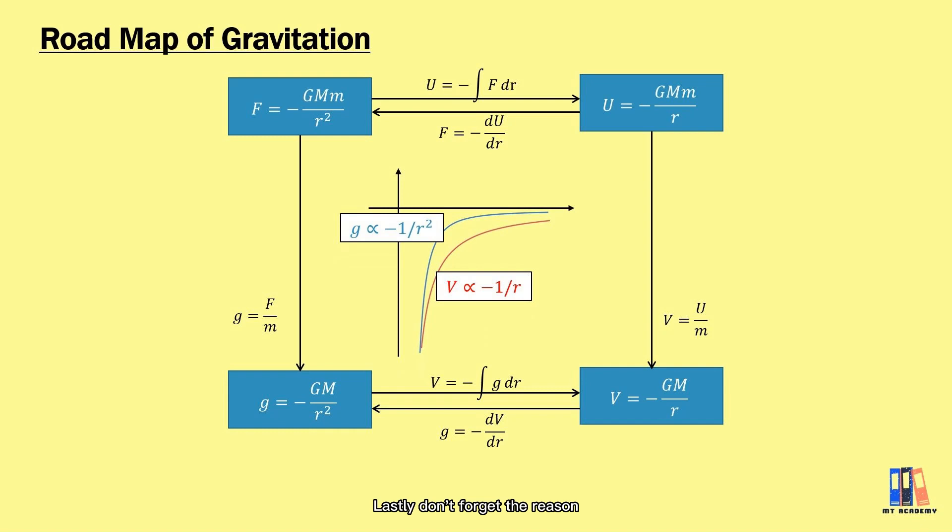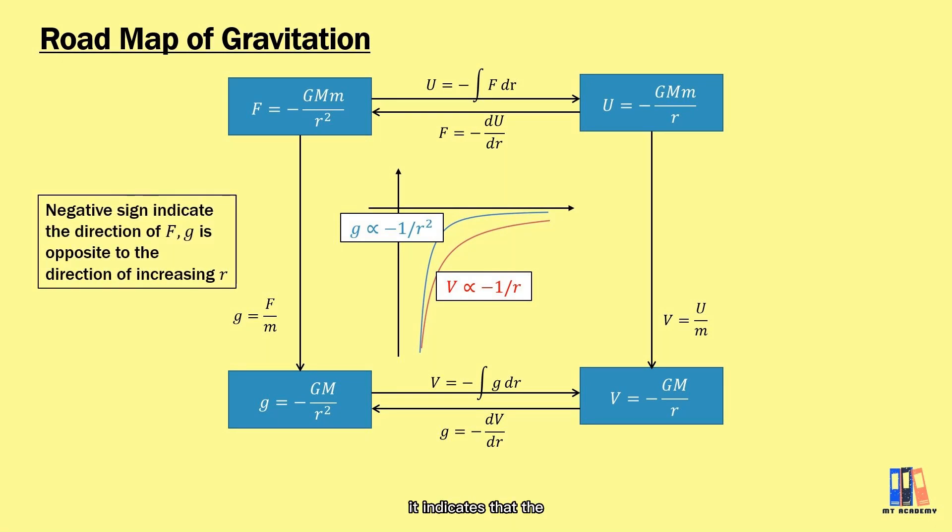Lastly, don't forget the reason why there is a negative sign here. For F and g, it indicates that the direction is opposite to the direction of increasing r. For U and V, it indicates that the work is done by Earth. Moving nearer to the Earth will cause a decrease in potential energy.